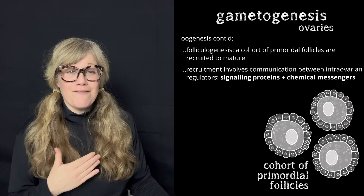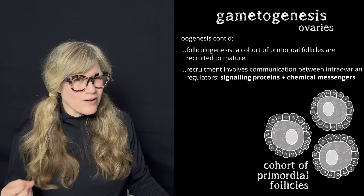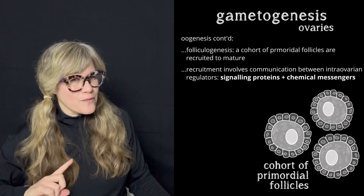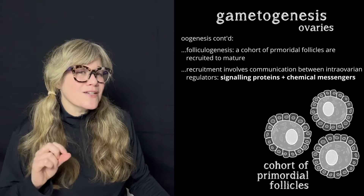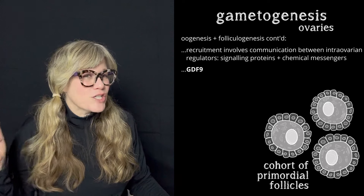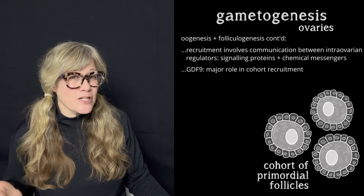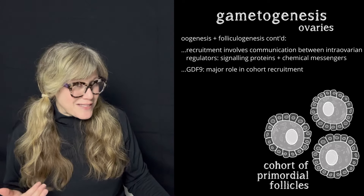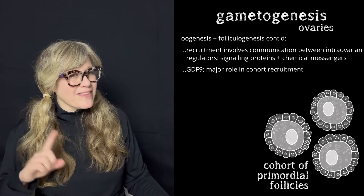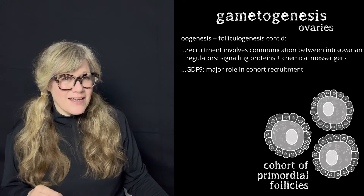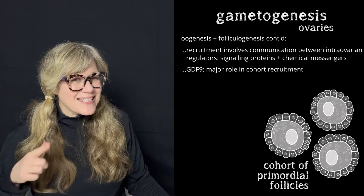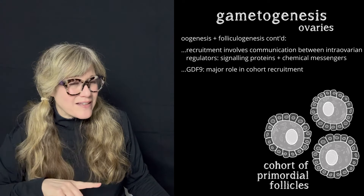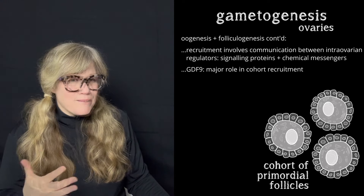These intra-ovarian regulators are very chatty — hard at work all of the time, but with specific communication and feedback patterns during recruitment. One intra-ovarian growth factor in particular, called growth differentiation factor 9, or GDF9, appears to have a major role in recruitment. What I find most interesting is that it's the oocyte itself within the follicle that produces and secretes GDF9. So it might be that the oocyte, as it expresses GDF9, is volunteering itself for recruitment, and the other regulators possibly determine its readiness or assist in its recruitment.